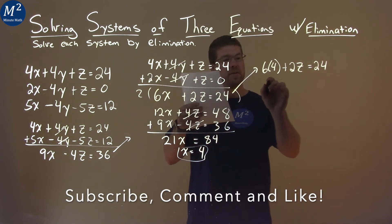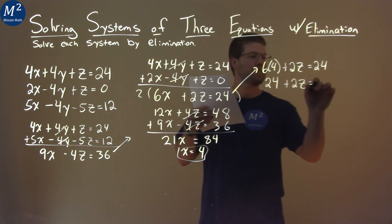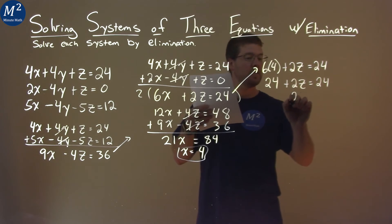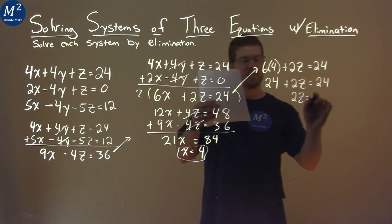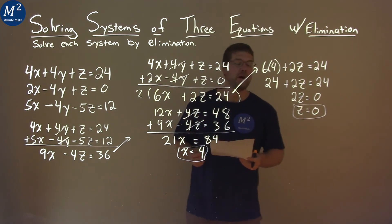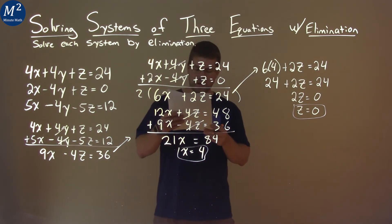And now we can solve for z. 6 times 4 is 24. And we have the 2z right here equals 24. Subtract the 24 to both sides and 2z equals 0. Divide both sides by 2 and z equals 0. And we have a second value now that we have found. So we have x and we have a z value. We need to find a y value.